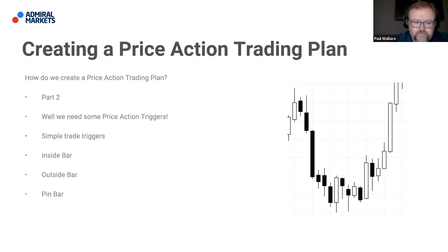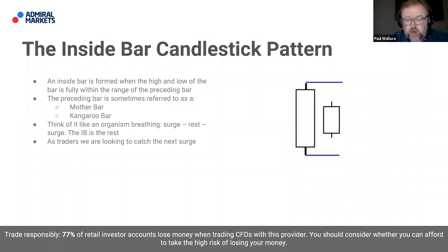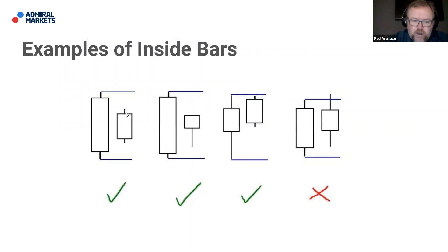Inside bar: an inside bar forms when the high and low of the bar is fully within the range of the preceding bar. They're sometimes called mother bars or kangaroo bars — the name isn't that important. Think of it like an organism breathing: surge, rest, surge, rest. The inside bar is the rest, and as traders we're looking to try and catch the next surge. The first three candles here are inside bars because the entire range of the bar is within the range of the bar preceding it. The one on the far right went higher than the preceding bar, so that's not an inside bar — it must be fully within the range.